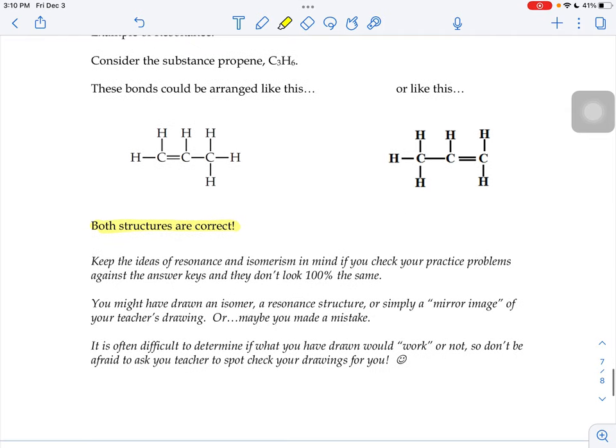So just keep the ideas of resonance and isomerism in mind when you check your practice problems against the answer keys. If they don't look exactly 100% the same, you might have drawn an isomer, perhaps. You might have drawn a resonance structure. Or maybe a mirror image of your teacher's drawing. Or maybe you made a mistake. And it's kind of hard to tell in the beginning if your drawings, if you've made mistakes or not. So don't be afraid to ask me for help to spot check your drawings for you if you're unsure.